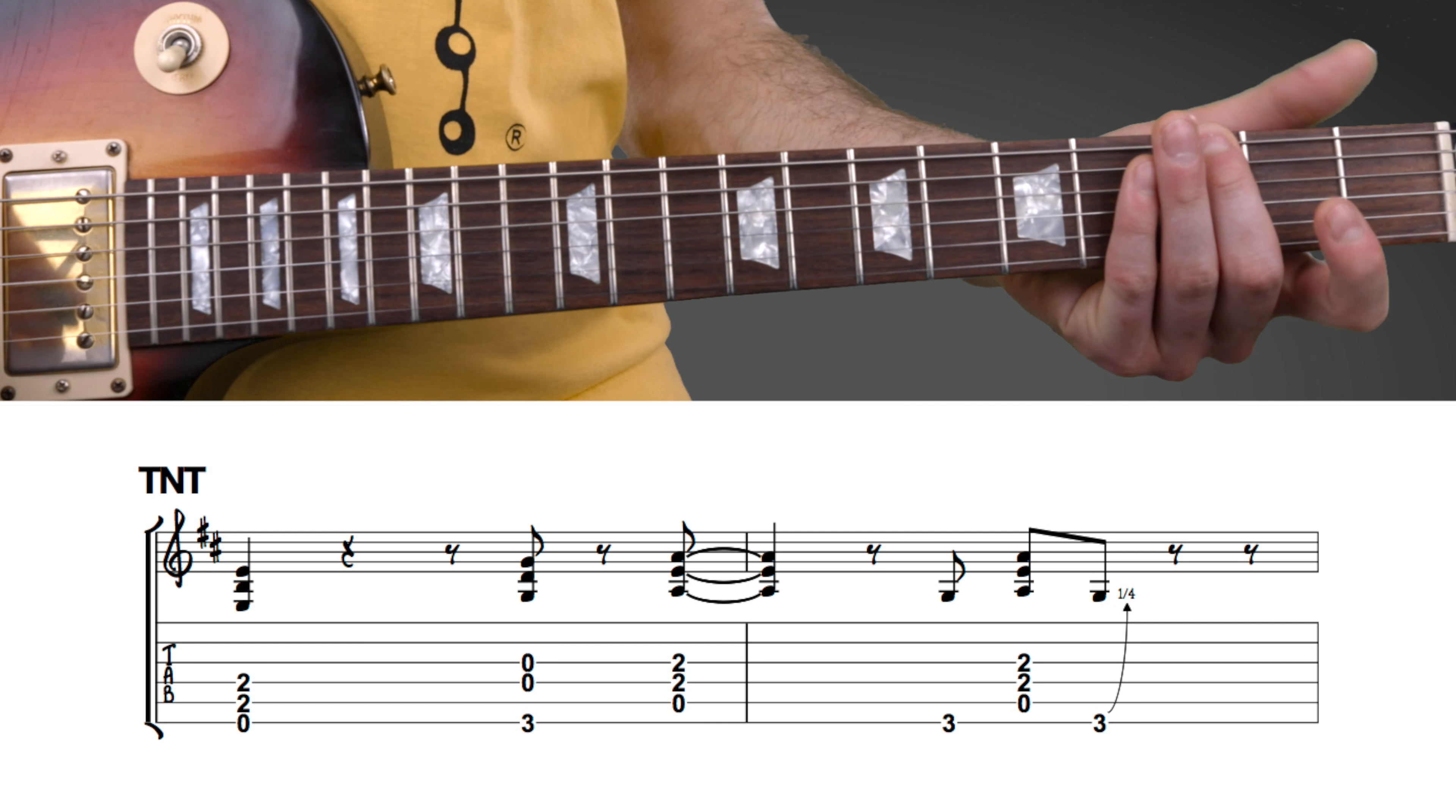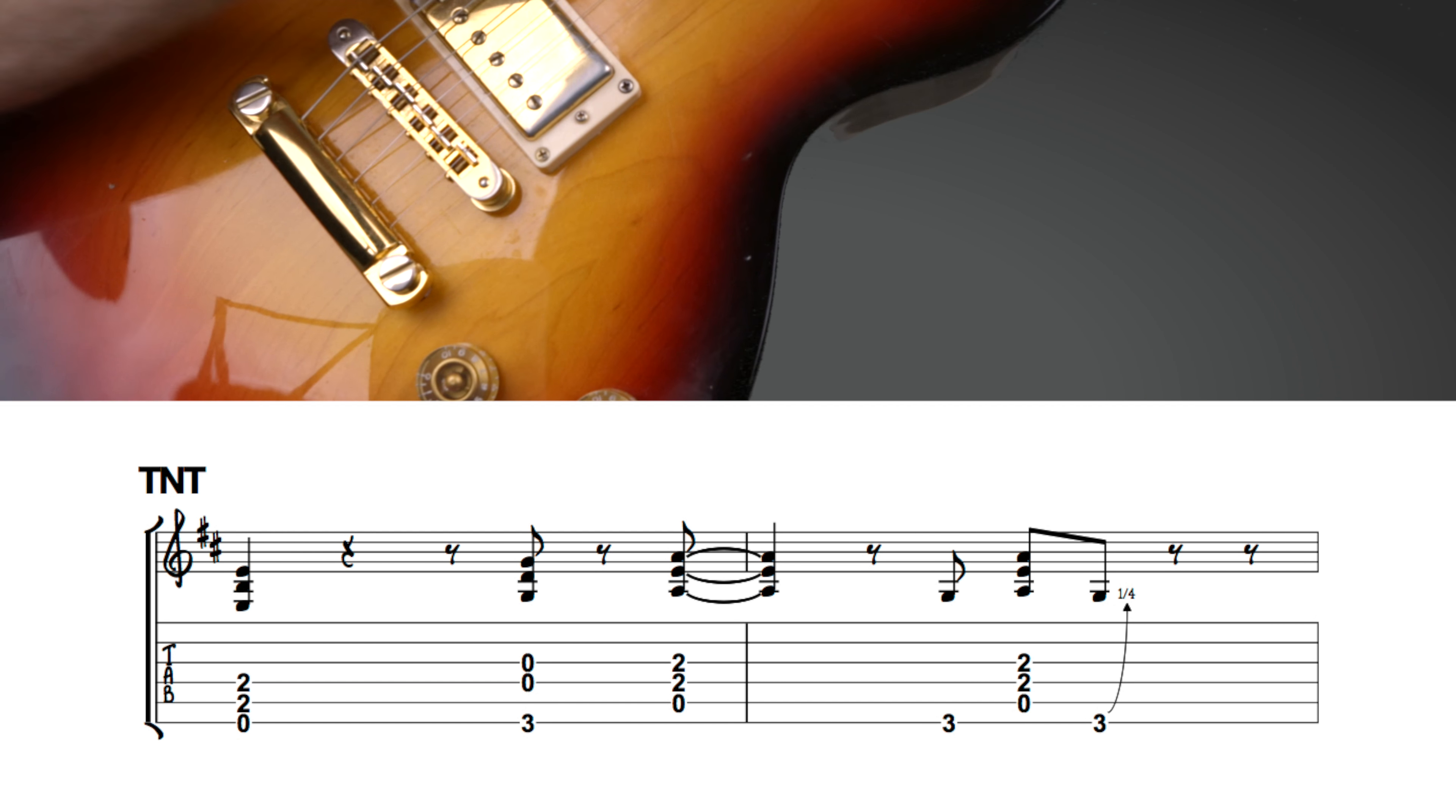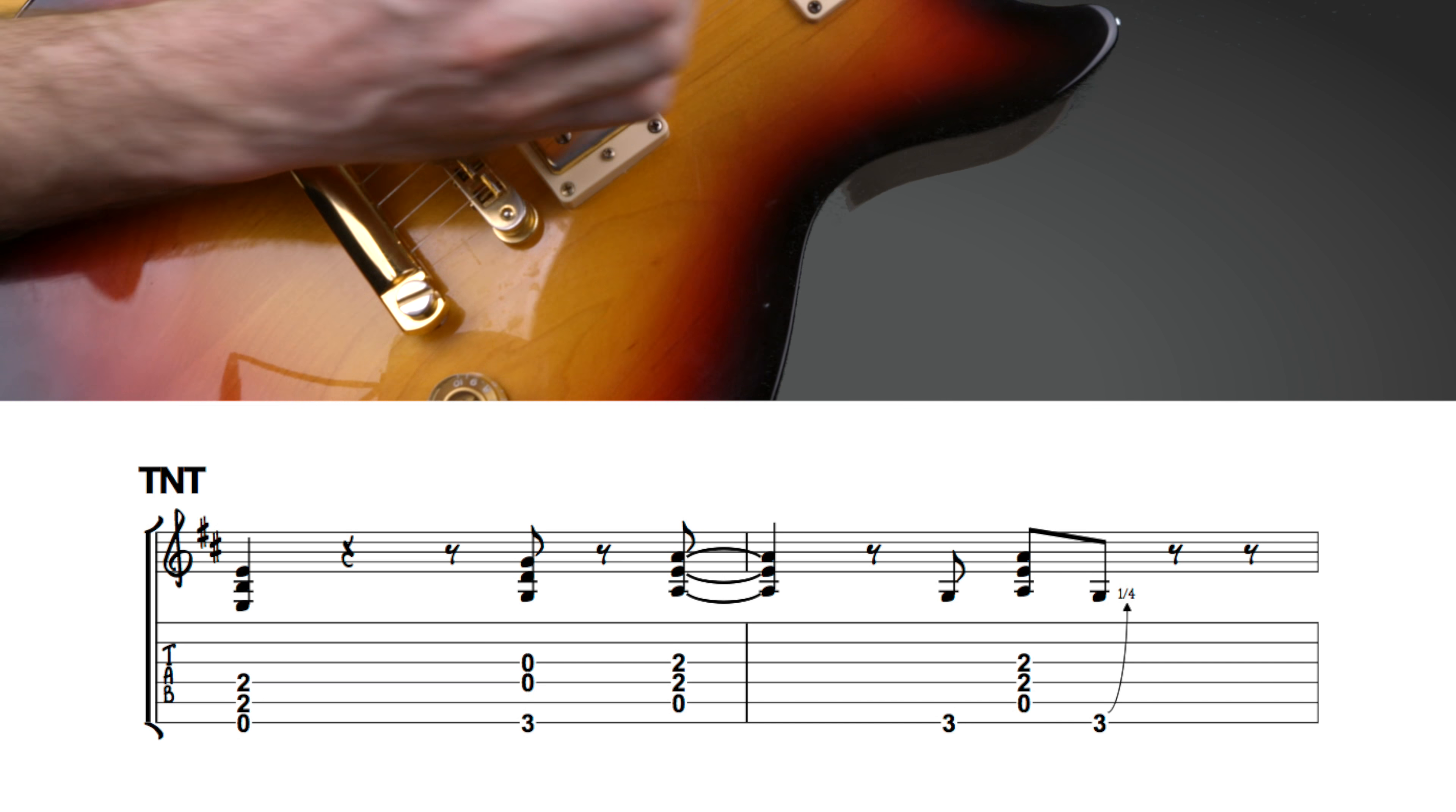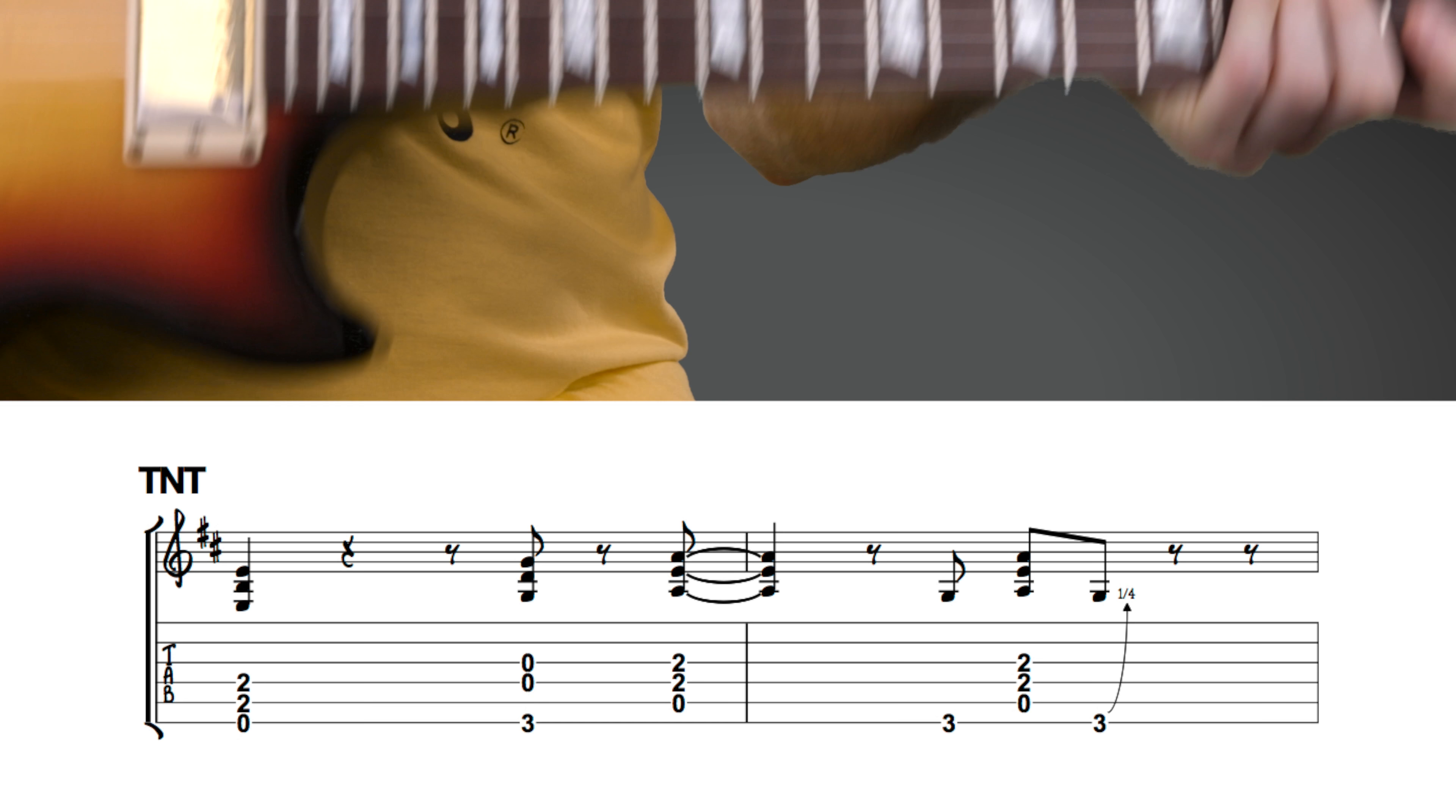Then it's fret three on the top string with a palm mute. To do a palm mute, get your palm, start here sort of in between the pickups, slide it back until it reaches the bridge here. That's how to do a palm mute.